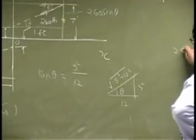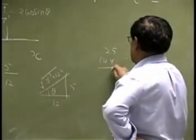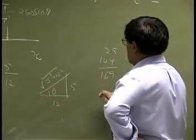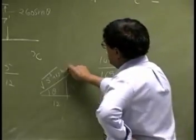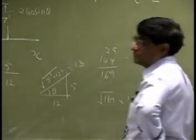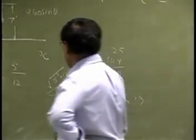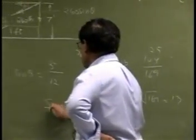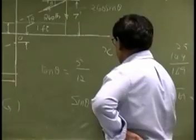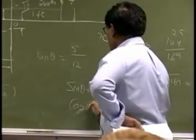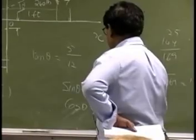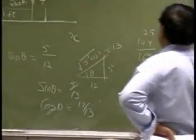That is 25, 144. So 9 and 6. So the square root of 169 should be 13. So that becomes 13. So the sine theta will be 5 over 13. Cosine theta is going to be 12 over 13.